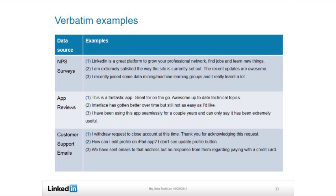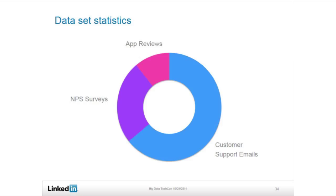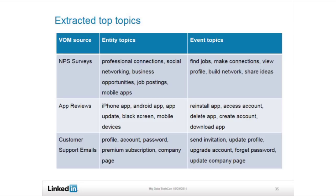Here is a rough distribution of the three data sets we are looking at. The majority of our ticket data is customer service emails. We do have quite a big volume of survey data and some app reviews for the LinkedIn mobile apps. Here are some sample top topics extracted out of the pipeline on each dataset. In the NPS surveys, we find top entity topics like 'professional connections,' 'social networking,' 'business opportunities,' 'job posting,' and 'mobile apps.' Those four kind of highlight what is the LinkedIn business — what benefits members will get by joining LinkedIn.